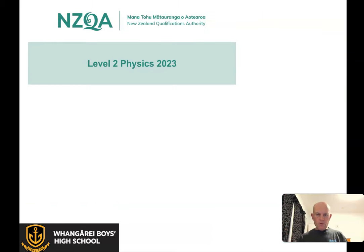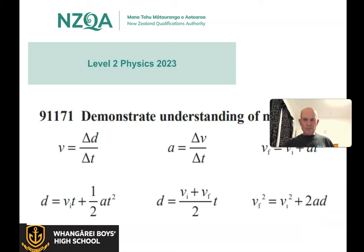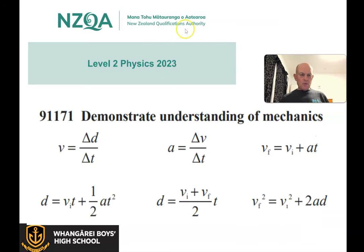Moving along. If we look at the 2023 NCEA Level 2 physics paper and the resource booklet, there are these four formulae here. We've got the top row on the left: velocity is change in displacement over time, which is pretty much taught in Year 10.